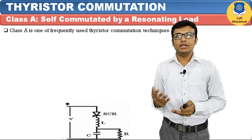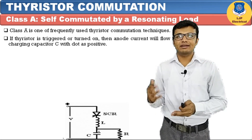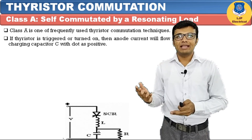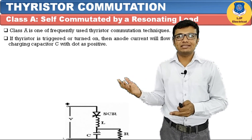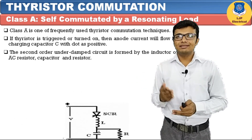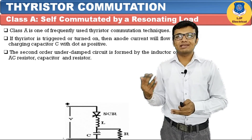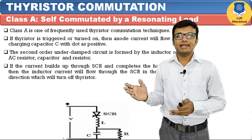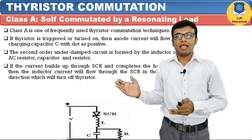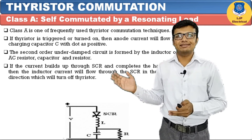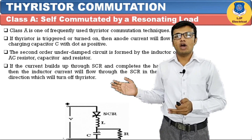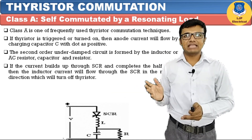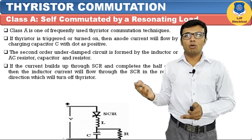Class A commutation is widely used in thyristor commutation techniques. When the thyristor is triggered or turned on, the anode current flows and charges the capacitor so the upper plate of the capacitor becomes positive. The L and C components form an under-damped circuit, so the waveform decays continuously. Current flows from the supply through the SCR, through the inductor, and into capacitor C, charging the upper plate positively.